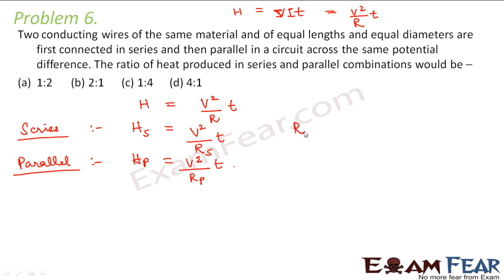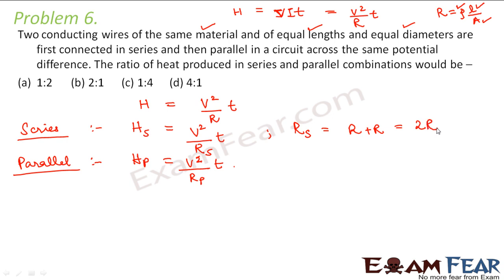Let us calculate the equivalent resistance in series combination. RS will be equal to R plus R, because resistance of both wires will be the same since they are made of the same material, have equal lengths, and equal diameters. Resistance is given by rho L by A, so rho, L, and A are all the same, therefore resistance of both wires is R. So RS equals 2R. Equivalent resistance in parallel combination gives 1 by R plus 1 by R, which implies Rp equals R by 2.